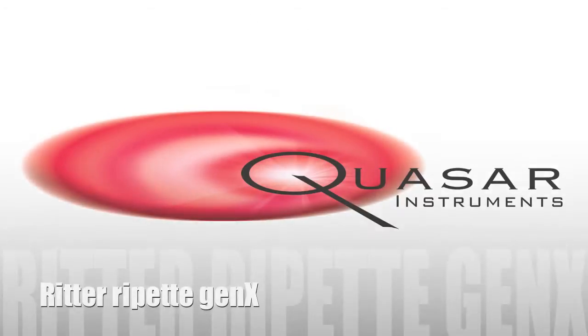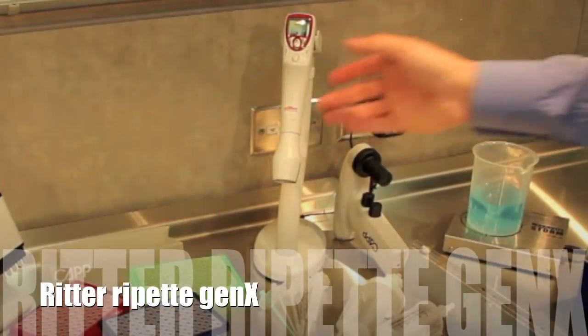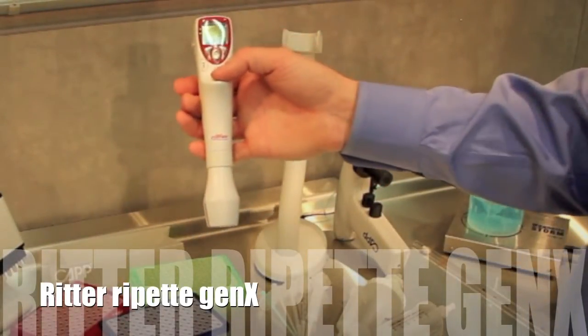In this video we'll be showing you some of the features of the electronic repeater pipette from Ritter, the Ritter Repet Gen X.